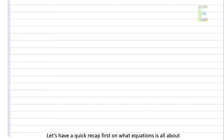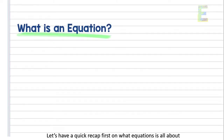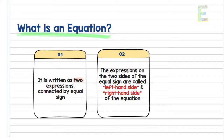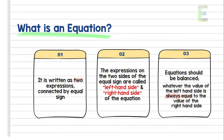Let's have a quick recap first on what equations is all about. An equation is written as two expressions connected by an equal sign. The expressions on the two sides of the equal sign are called the left-hand side and right-hand side. Also, equations should be balanced, meaning whatever the value of the left-hand side is always equal to the value of the right-hand side.